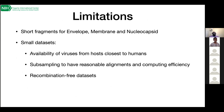Some limitations: short fragments, especially for the envelope and membrane, are not phylogenetically rich or informative enough to make strong conclusions. Some datasets are quite small — for example, the bats phylogenetically closest to the human viruses are grossly undersampled. And because we had to use recombination-free datasets, we lost some data, which we can't use for phylogenetic inferences as it might lead to wrong conclusions.